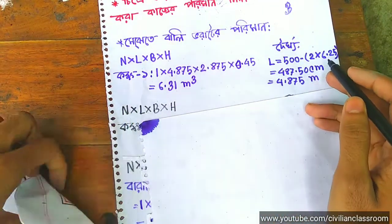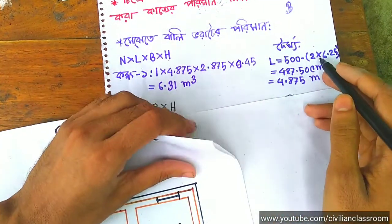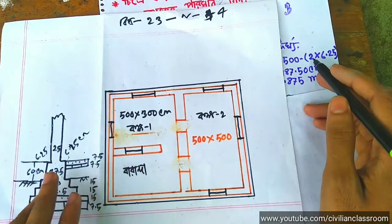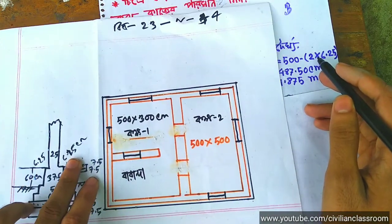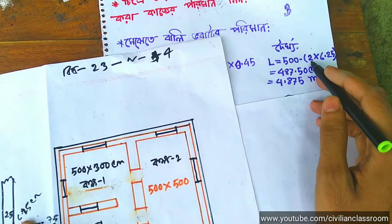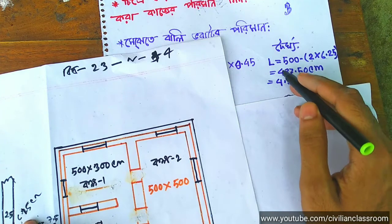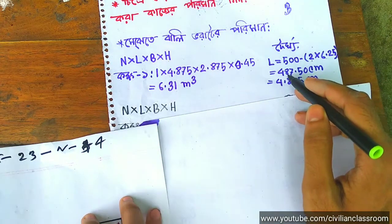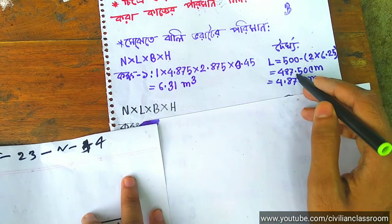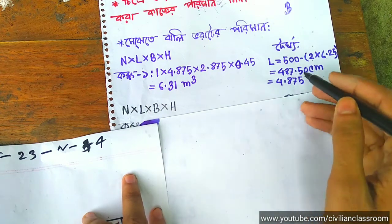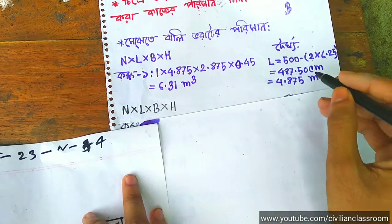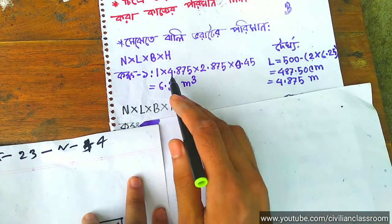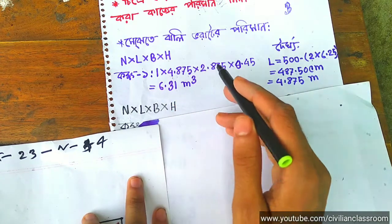Here we have two others: 6.25 and 6.25, which is 6.25. So the calculation is 487.50 cm. Here we have 4.875 cm.